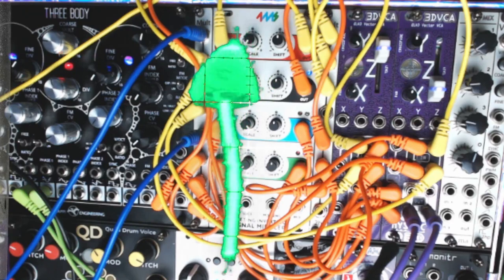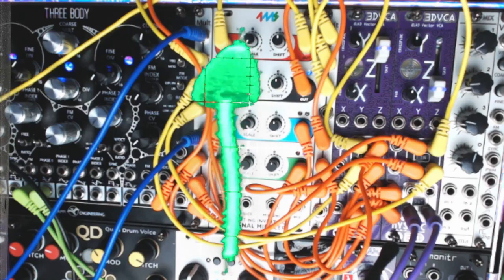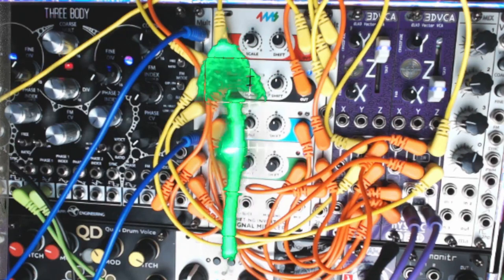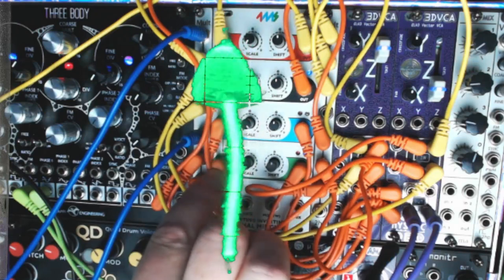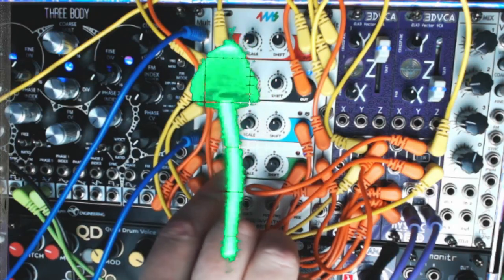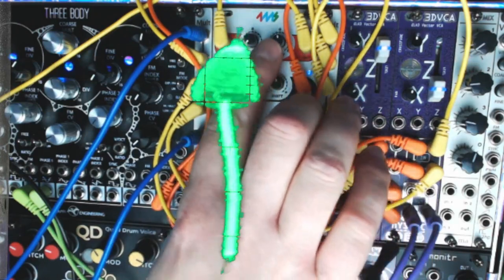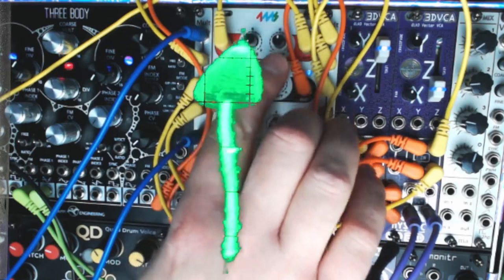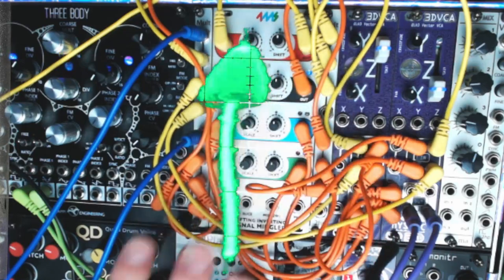In this case we take the X and Y signals for the mushroom coming from our audio interface, mult them using our 2HP passive mults here, and then send each signal into a channel of the SISM where we can invert the voltages using our attenuverters.